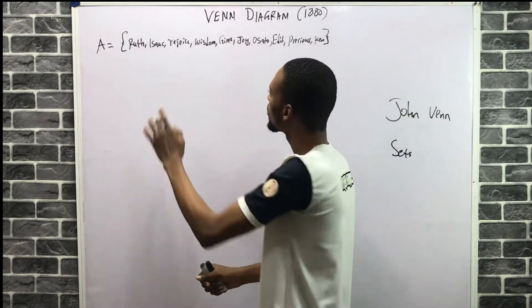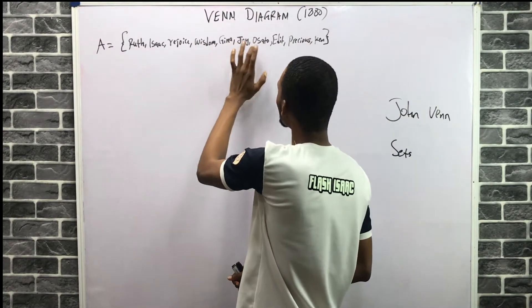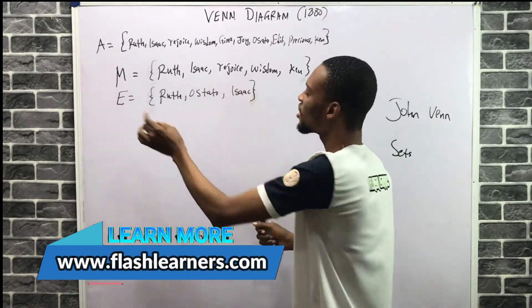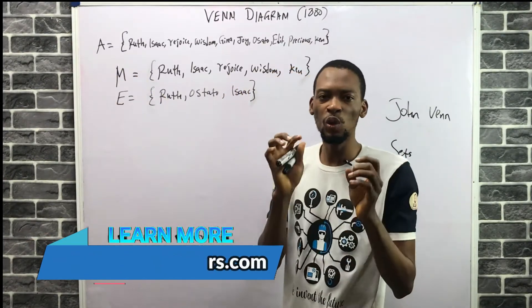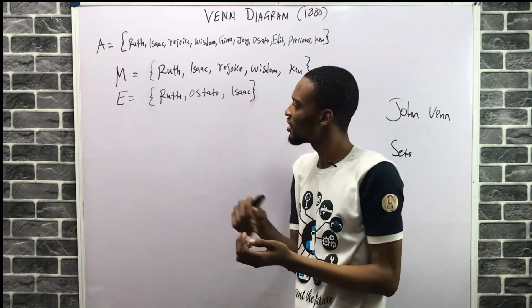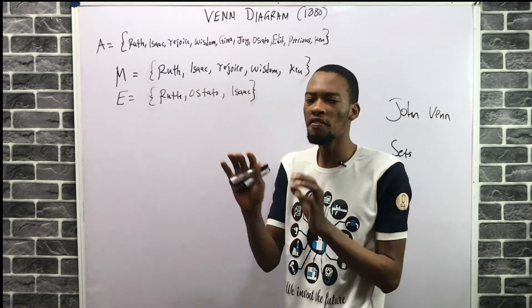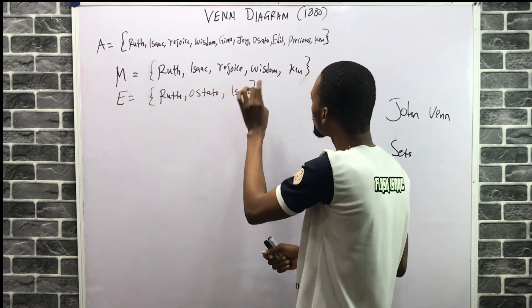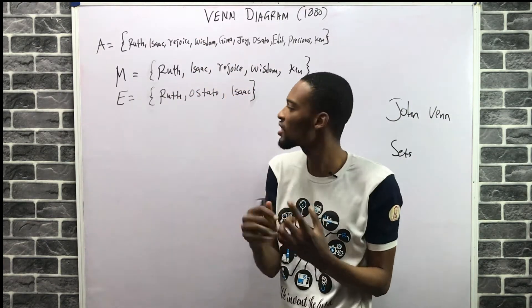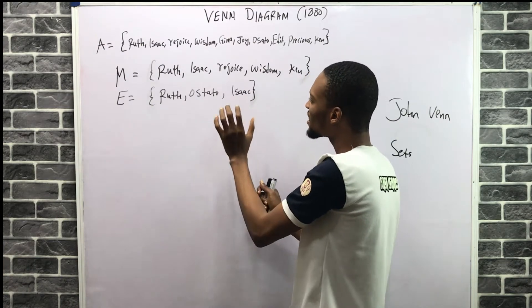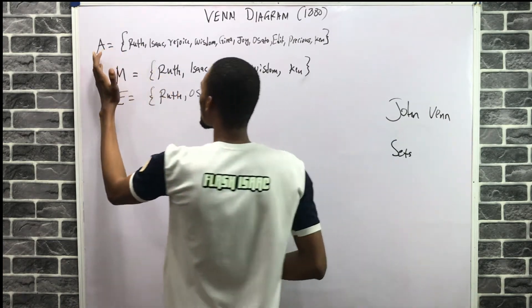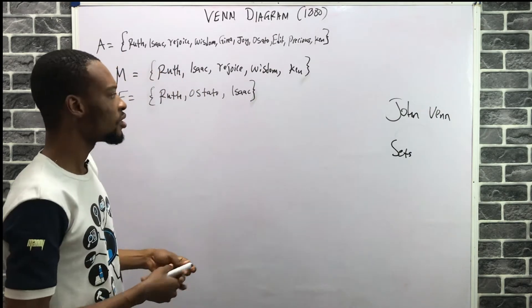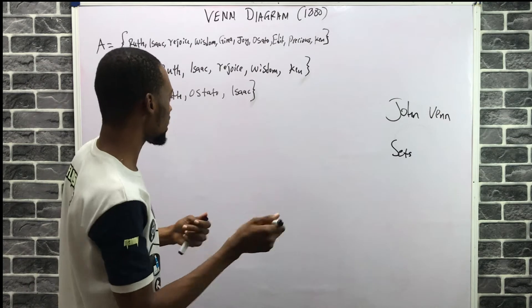Let A be a set of 10 best friends: one, two, three, four, five, six, seven, eight, nine, ten. Let M be those who love mathematics and E be those who love English. Out of the 10 friends, Roots, Isaac, Rejoice, Wisdom, and Ken love mathematics. Roots, Usato, and Isaac love English. So A is the universal set, M is mathematics, and E is English.